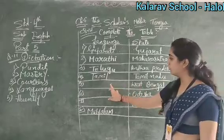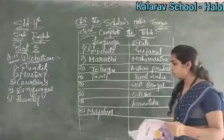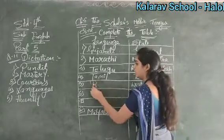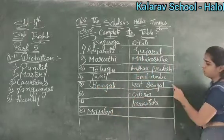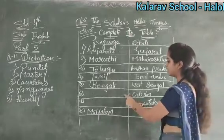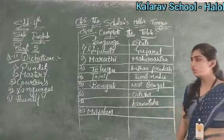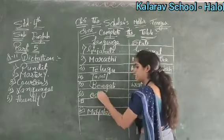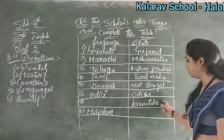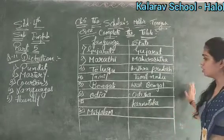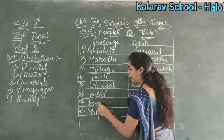The fifth number is West Bengal. The language used in West Bengal is Bengali, so we will write Bengali. The sixth number is Odisha — the language used in Odisha state is Odia. The seventh number is Karnataka — the language used in Karnataka is Kannada, so we write Karnataka state.